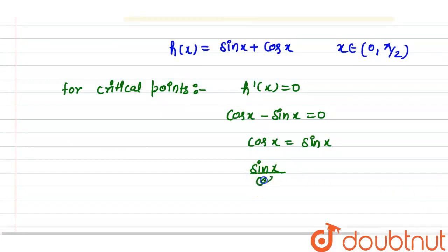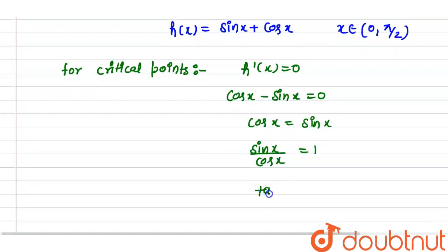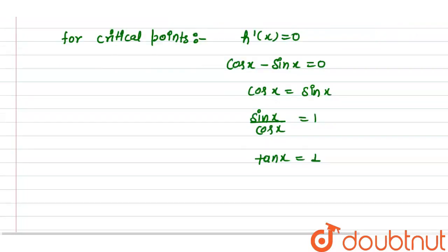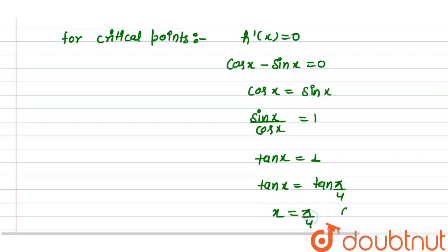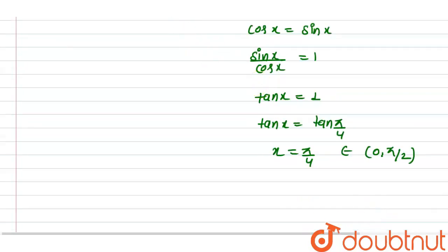Sin x upon cos x is equal to 1. Sin upon cos is tan x. So tan x is equal to 1. When is tan x equal to 1? When x is equal to pi by 4. Tan x equals tan pi by 4, so x is equal to pi by 4, which belongs to 0 to pi by 2. So our critical point is pi by 4.